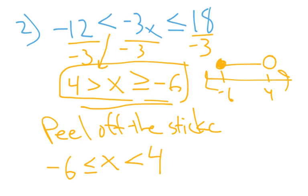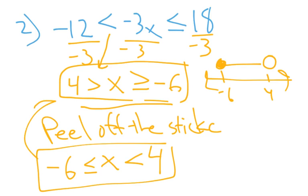So you end up with −6 ≤ x < 4. These two forms are the same inequality, but this rewritten version is easier to read and graph. That's compound inequalities — good luck with your homework or practice, and let me know if you have any questions.